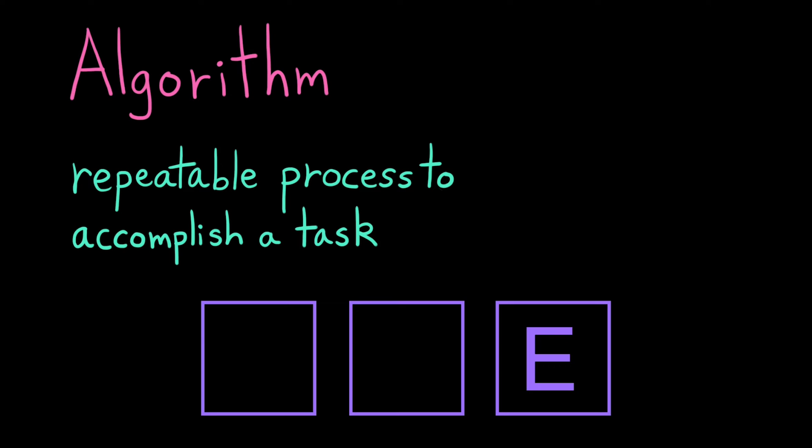Now for the terminology. All these things I've just been calling processes, in computer science these are called algorithms. An algorithm is just a repeatable process to accomplish a task.